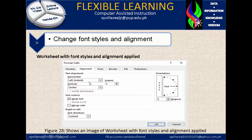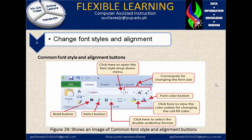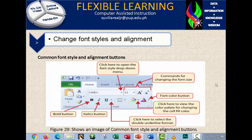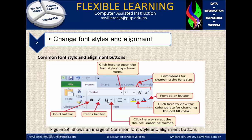Figure 28 shows an image of a worksheet with font styles and alignment applied. We have horizontal left, indent is 2, vertical is center, and it's wrap text, and right to left is context. Figure 29 shows an image of common font style and alignment buttons. You can click the font name — for example Calibri — font size as 11, the bold button, italic button, underline button, fill color, and font color. You can also resize the font using those icons.